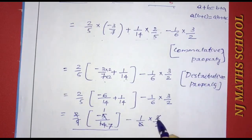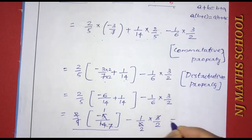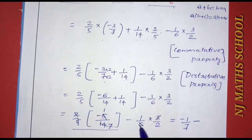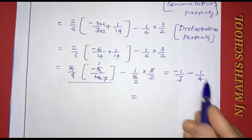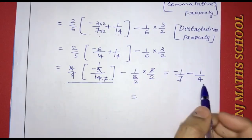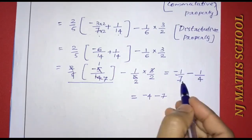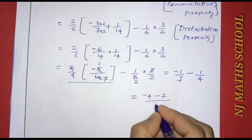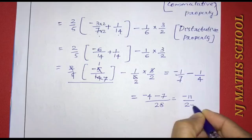Then minus 1 by 6 into 3 by 2: 6 and 3 simplify — 3 divides into 6 twice — giving 1 by 2 into 1 by 2, which is 1 by 4. So we have minus 1 by 7 minus 1 by 4. Cross multiplying with denominator 7 into 4 equals 28: minus 1 into 4 is minus 4, minus 1 into 7 is minus 7. Minus 4 minus 7 equals minus 11 divided by 28.